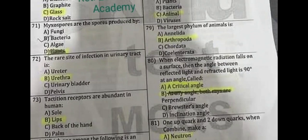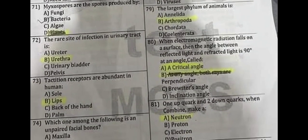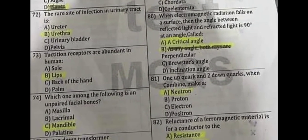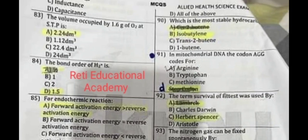Question number 80: When electromagnetic radiation falls on a surface, the angle between the incident light and reflected light is 90 degrees — A: critical angle is the correct answer. Question number 81: One up quark and two down quarks when combined make A: a neutron. Question number 82: Reluctance of ferromagnetic material is to a magnet what resistance is to a conductor.